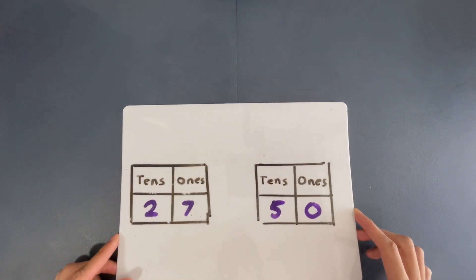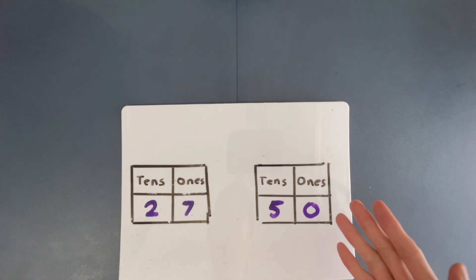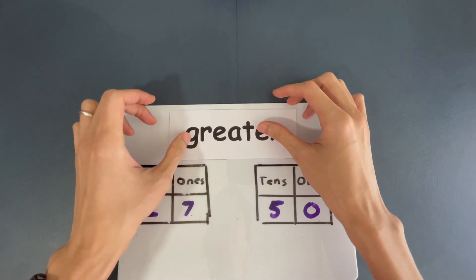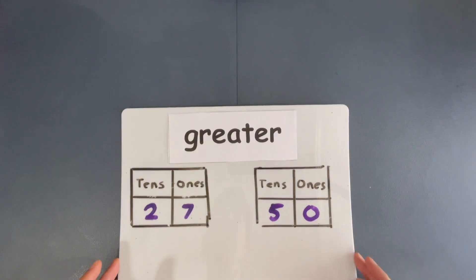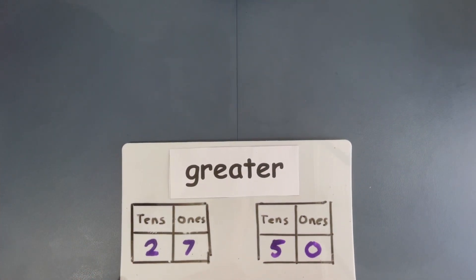Now, we are going to give you two numbers over here, 27 and 50. You are going to tell me now which one is greater, bigger. Which is the greater number?